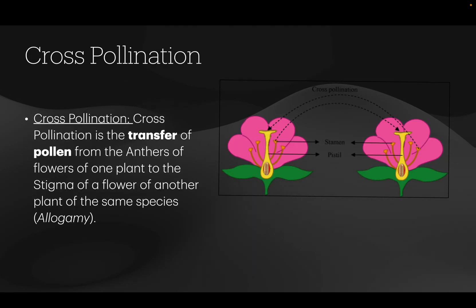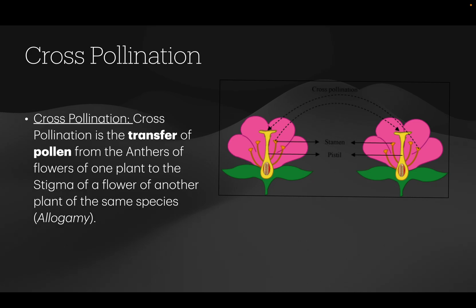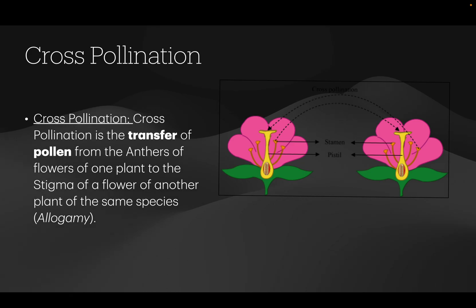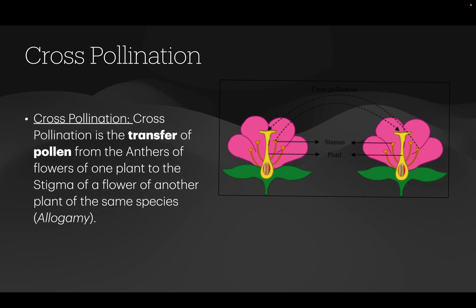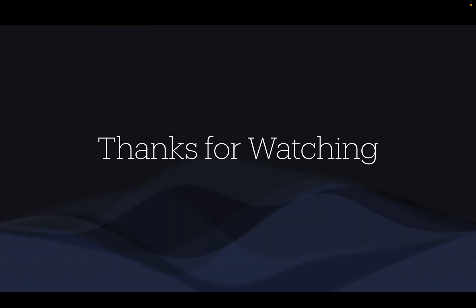Cross pollination is the transfer of pollen grains from the anther of a flower of one plant to the stigma of a flower of another plant of the same species. This is also known as allogamy. A key point to remember is that pollination can only occur between plants of the same species; if they are not the same species, pollination will not occur.